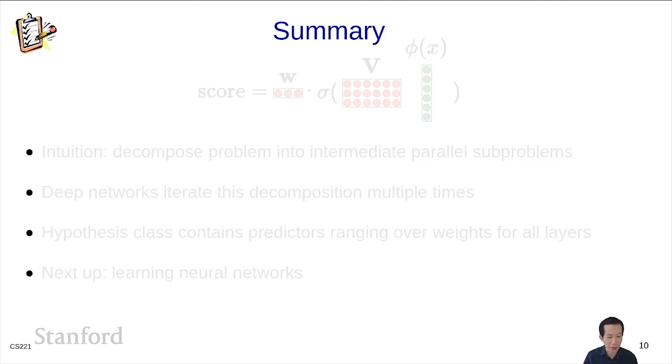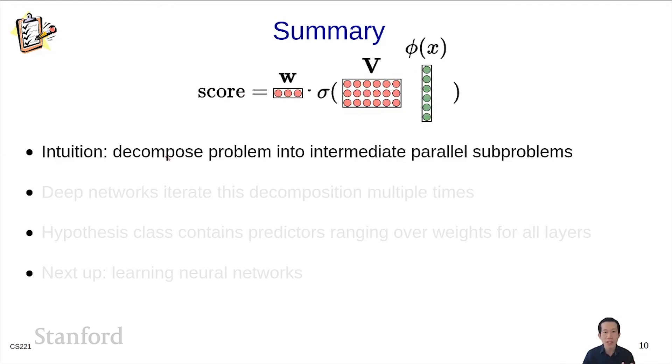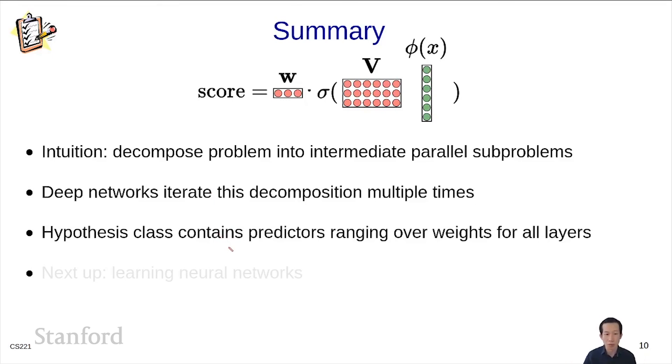To summarize, we started with the XOR problem—testing whether two cars will collide—and used it to motivate problem decomposition and eventually neural networks. Neural networks allow you to define nonlinear predictors by decomposing the problem into intermediate subproblems and combining them. You can iterate on this decomposition multiple times, giving rise to multiple levels of abstraction and steps of computation. The hypothesis class contains all predictors where the weights of all layers can vary freely. Next up, we'll show you how to learn the weights of a neural network.